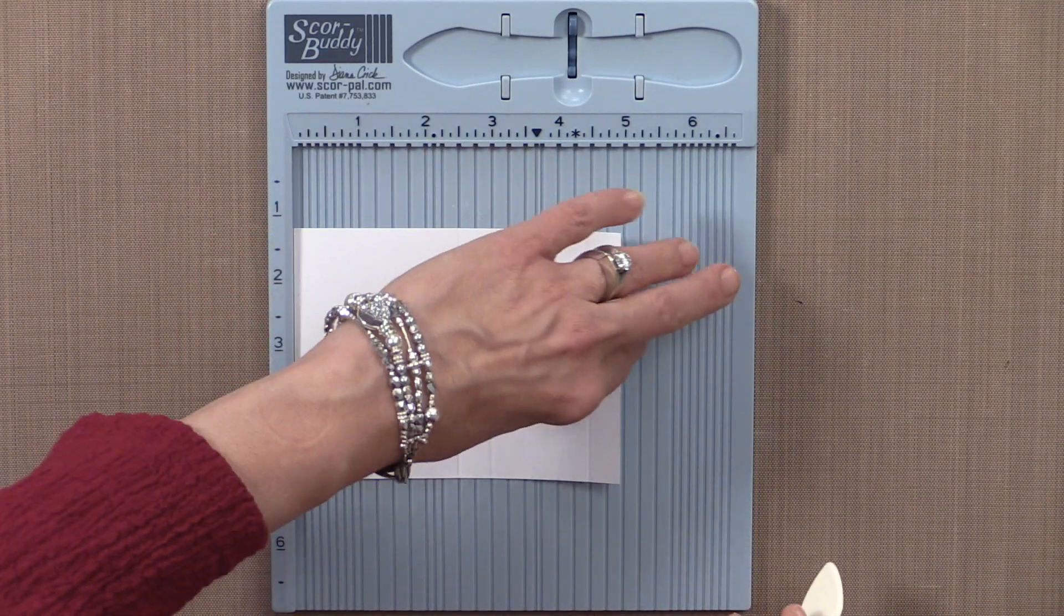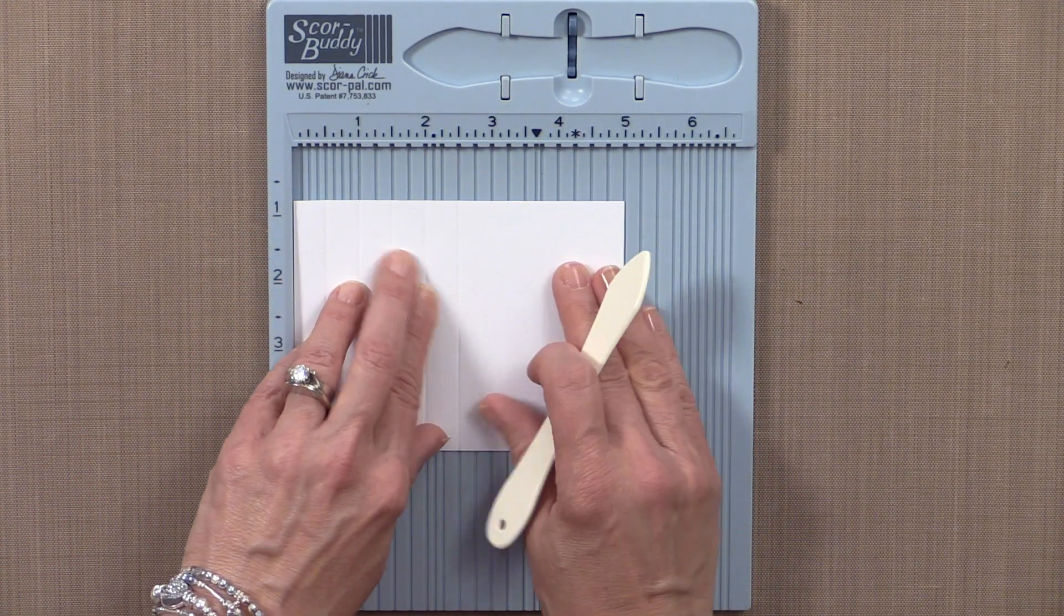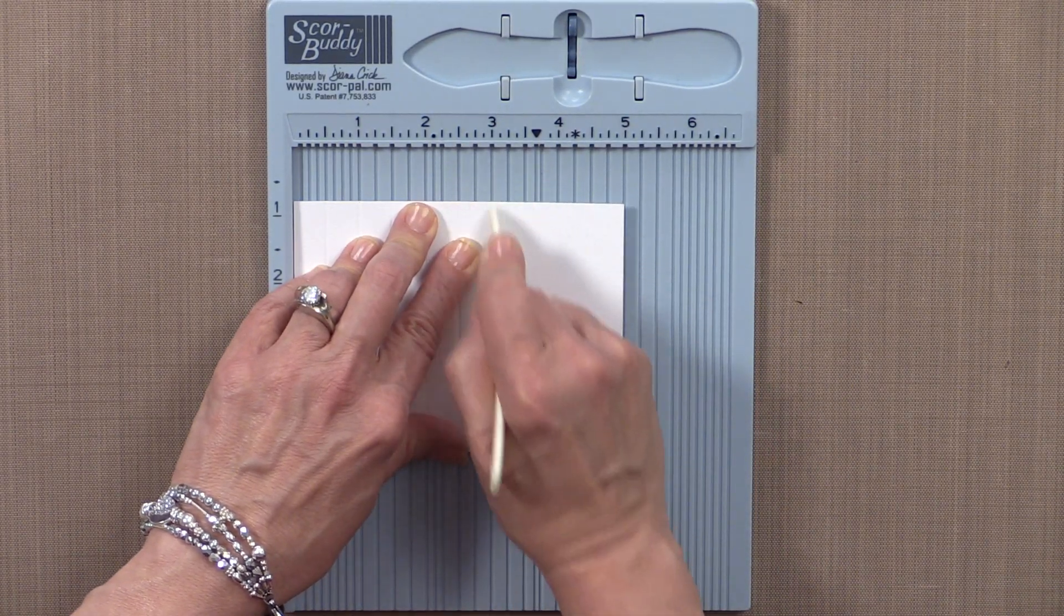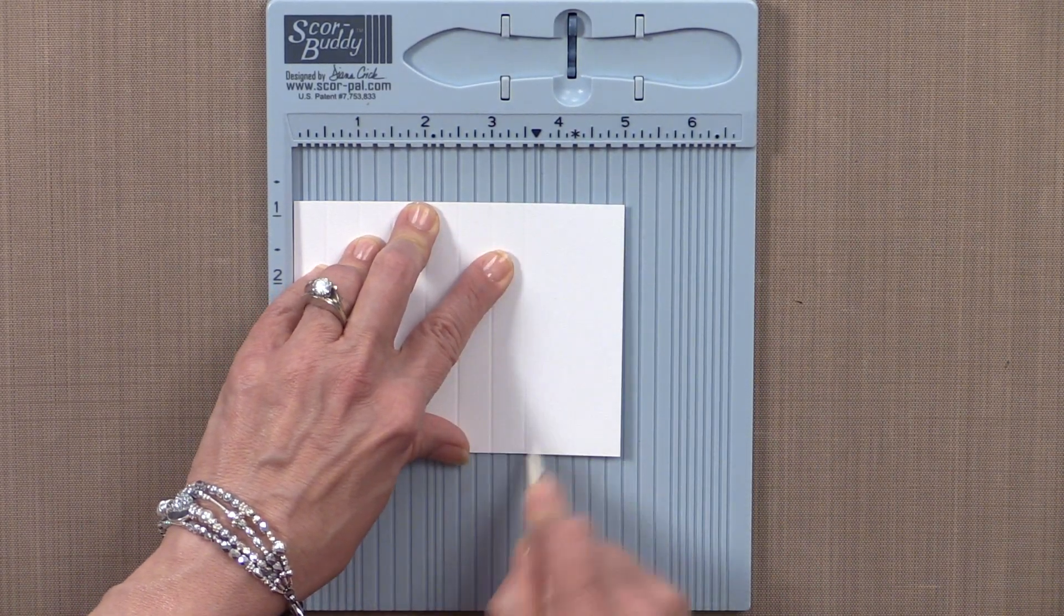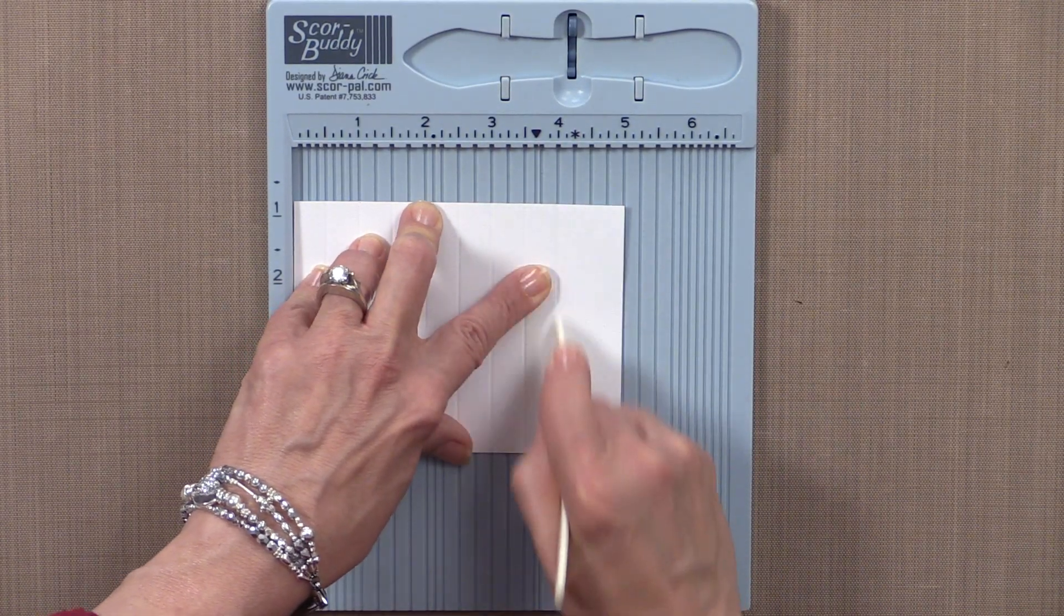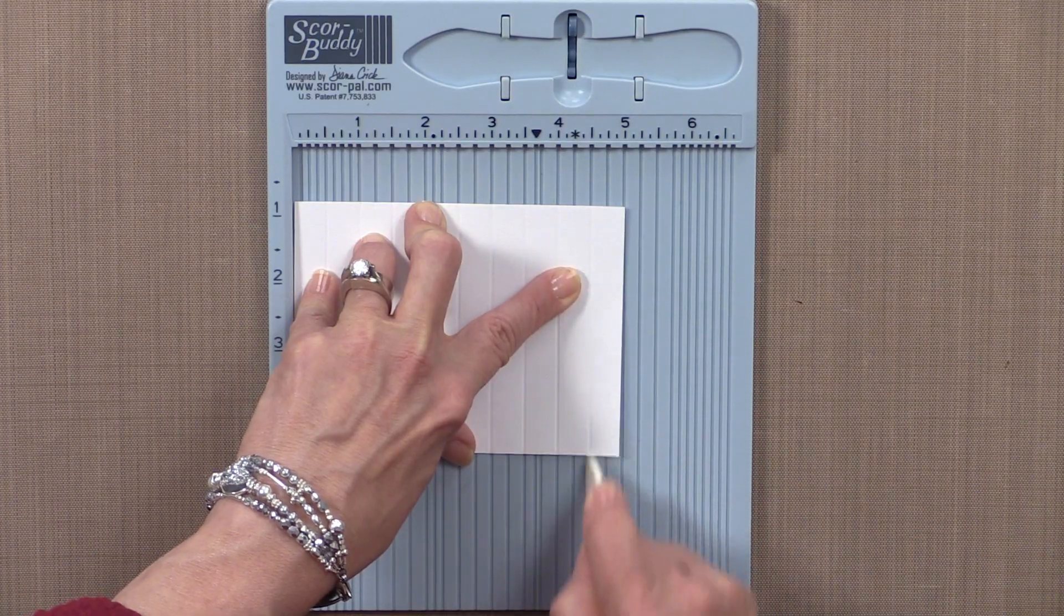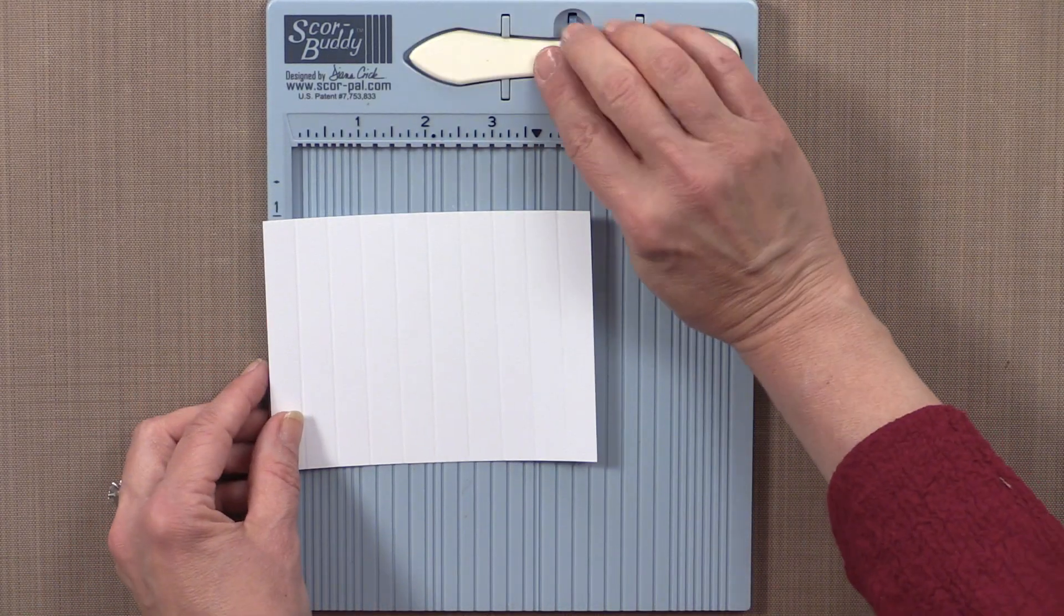Then I'm going to flip it around and work my way back up again. I just find that it's easier to not have to go too close to the left side of my score buddy. By flipping it around and keeping everything more toward the right, it's easier for me to get even strokes.